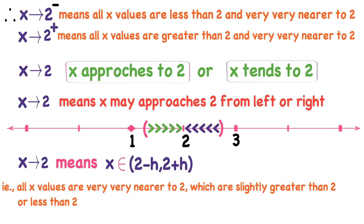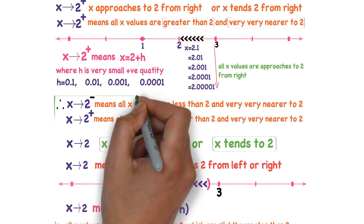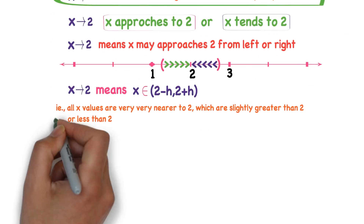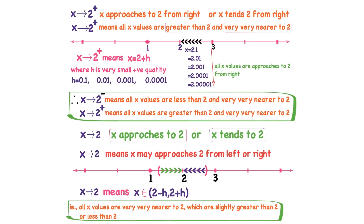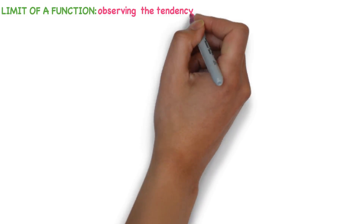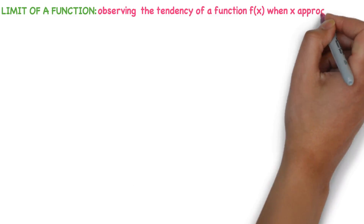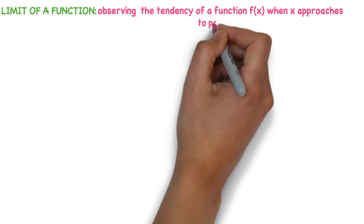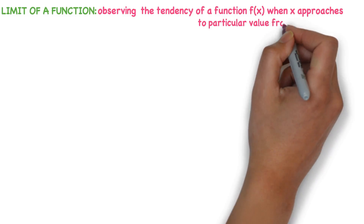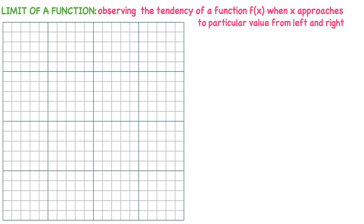To conclude: x approaches to 2 from left means all x values are less than 2 and very very nearer to 2. X approaches to 2 from right means all x values are greater than 2 and very very nearer to 2. X approaches to 2 means it may approach from left or right. Now we will try to understand what is the limit of a function — observing the tendency of a function f(x) when x approaches a particular value from left and right.